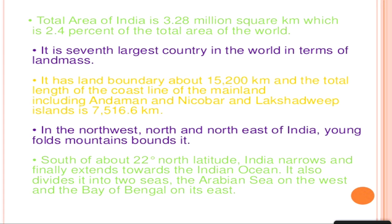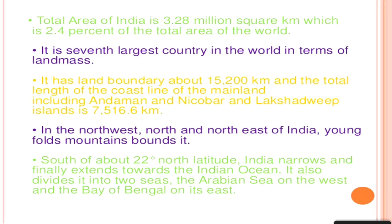The total area of India is 3.28 million square kilometers, which is approximately 2.4 percent of the world's total area. It is the seventh largest country in the world in terms of land mass. It has a land boundary of approximately 15,200 kilometers. The total length of the coastline, including the Andaman and Nicobar Islands, is 7,516.6 kilometers. In the northwest, north, and northeast, the young fold mountains bound it, whereas in the south, around 22 degrees north latitude, India narrows and tapers towards the south, dividing the Indian Ocean into the Arabian Sea and the Bay of Bengal.